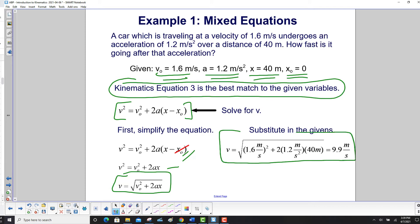Then, substitute in all the givens, do the multiplication and the addition, take the square root, and you get 9.9 meters per second.